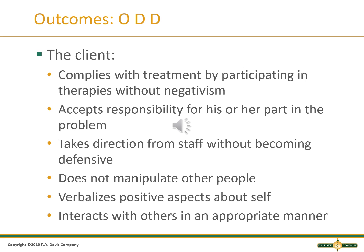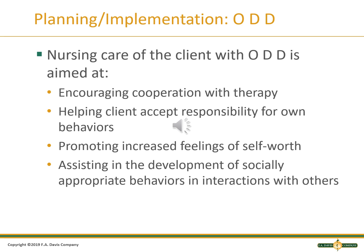Goals and outcomes for ODD patients: The client complies with treatment by participating in therapy without negativism, accepts responsibility for his or her part in the problem, takes direction from staff without being defensive, does not manipulate other people, verbalizes positive aspects about self, and interacts with others in a proper manner. Refer to table 23-7 in your textbook for a comprehensive care plan for ODD patients.